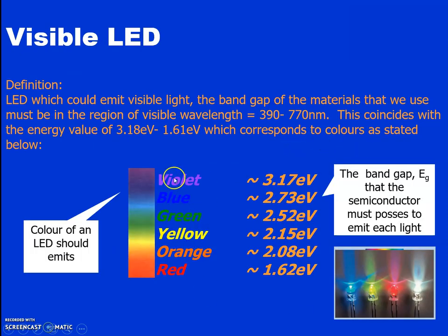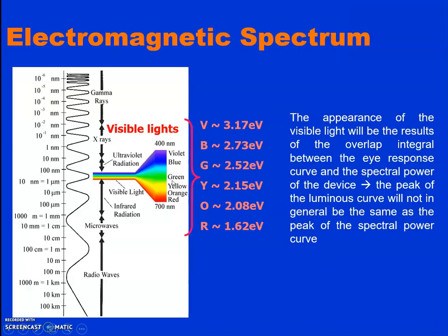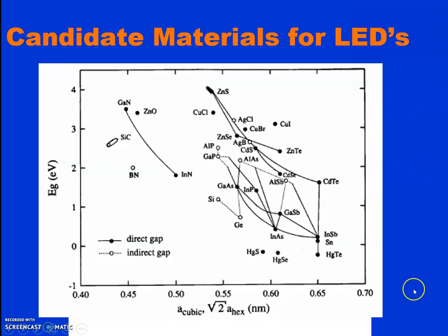Looking at the visible spectrum — violet, blue, green, yellow, orange, red — the corresponding energy gap ranges from 1.62 eV to 3.17 eV. When the energy bandgap is smaller you get red; when it is around 3.17 eV you get violet. In the electromagnetic spectrum, visible light runs from approximately 400 nm (violet) to 700 nm (red). Red corresponds to 1.62 eV and violet corresponds to 3.17 eV. Discovered compound semiconducting materials such as gallium arsenide and indium phosphide emit different wavelengths corresponding to these energy gaps.